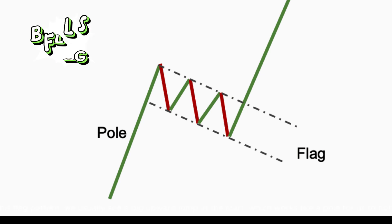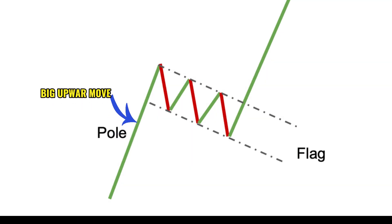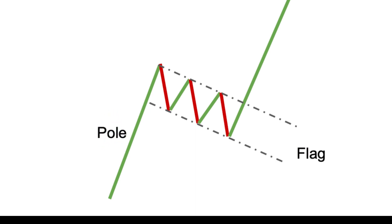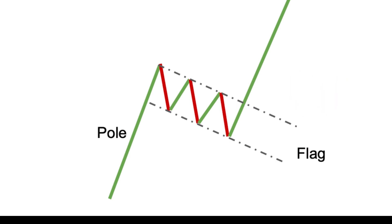Our first pattern is the bullish flag pattern. In this pattern we usually see a big upward jump at the start, which works like a pole for us to notice. After this move we can see a series of lower lows and lower highs. When the price reaches the resistance for the third time, that area will be a perfect breakout area, and after the breakout we get to see a bullish move.